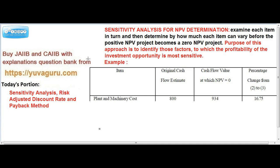Now how to check this sensitivity? How much sensitive means what actually? If the project is giving me a positive NPV — remember this, look at this sentence clearly — I will consider that project up to the level where it gives me 0 NPV. Positive NPV to 0 NPV. When I shift this project from positive to 0 NPV, at that time, how much does each item vary?